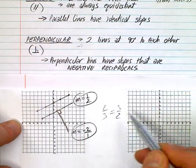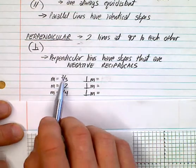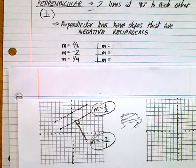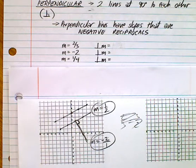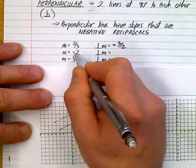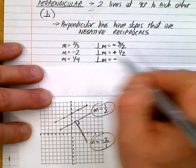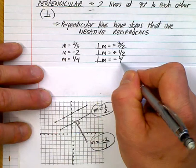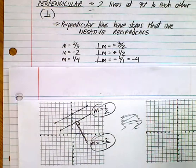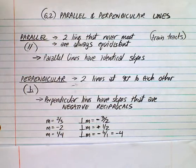The reciprocal of one half is two over one, and the reciprocal of two thirds is three halves. Let's practice: if the slope is two thirds, the perpendicular slope is negative three halves — it's positive so it becomes negative, and you flip it. If the slope is negative two, the perpendicular slope is positive one half — flip it. If the slope is one quarter, the perpendicular slope is negative four.